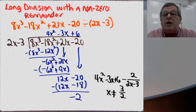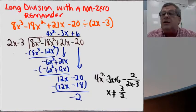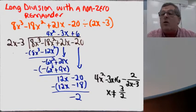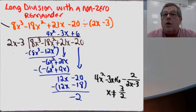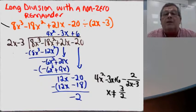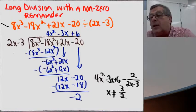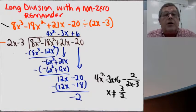I love long division so much, and I'm tired of doing it with a zero remainder. I want a non-zero remainder. So here I go: I have the function 8x cubed minus 18x squared plus 21x minus 20, and I'm being asked to divide it by 2x minus 3. Here is my setup: I've got 2x minus 3 dividing into 8x cubed minus 18x squared plus 21x minus 20.